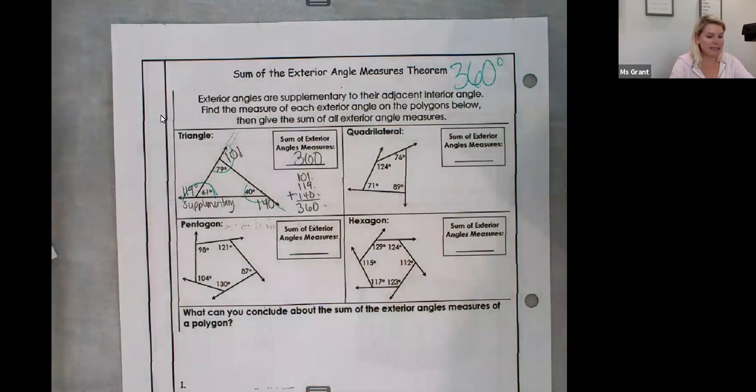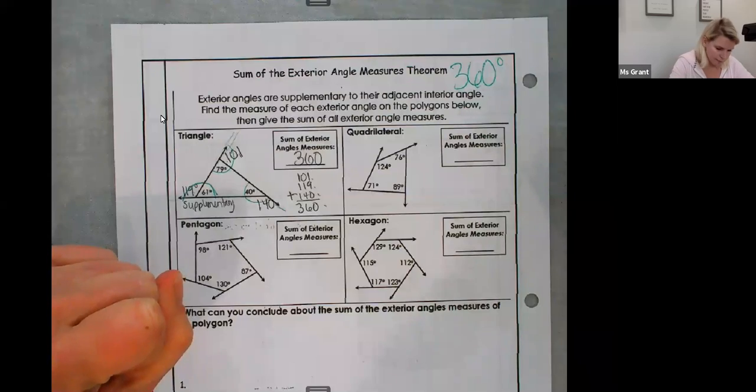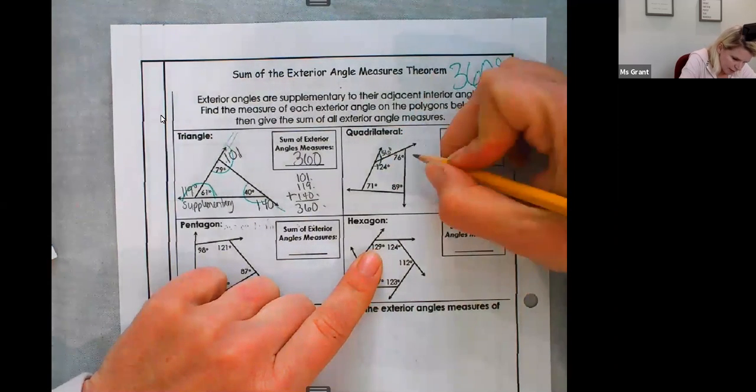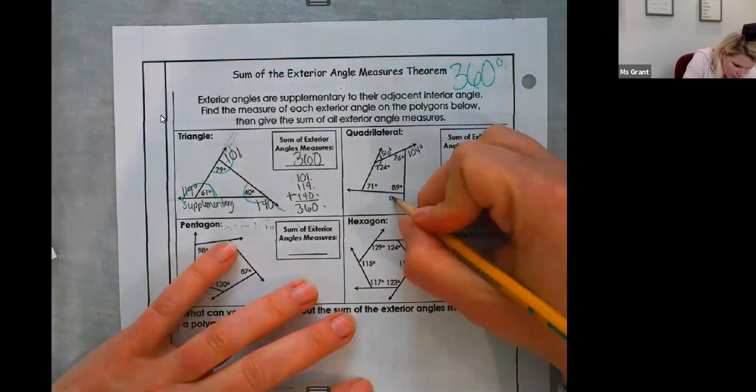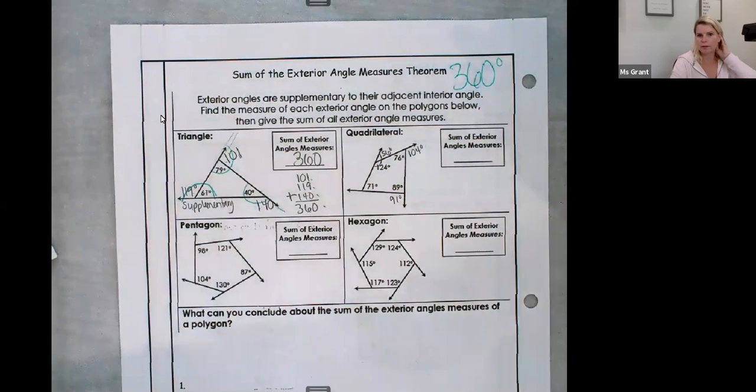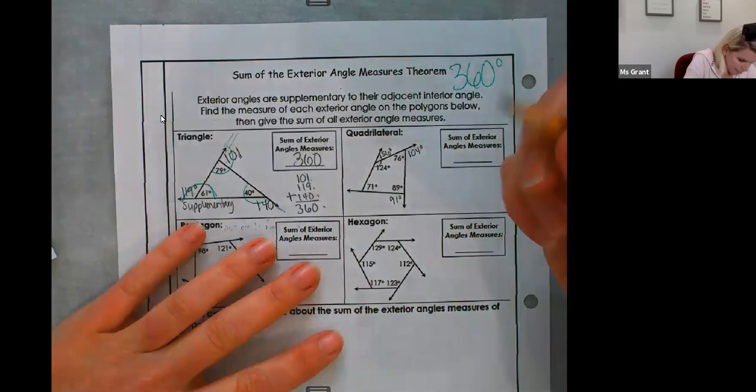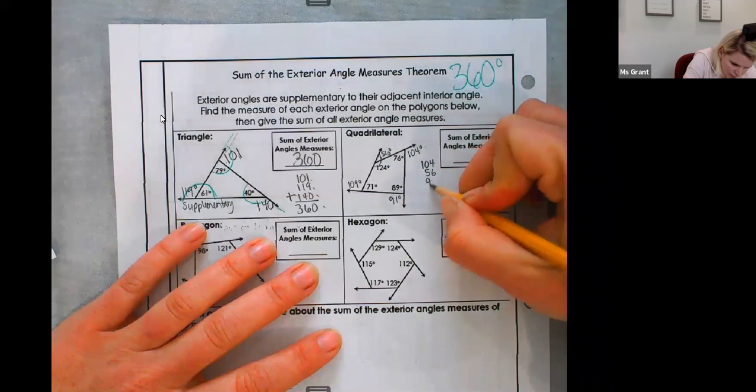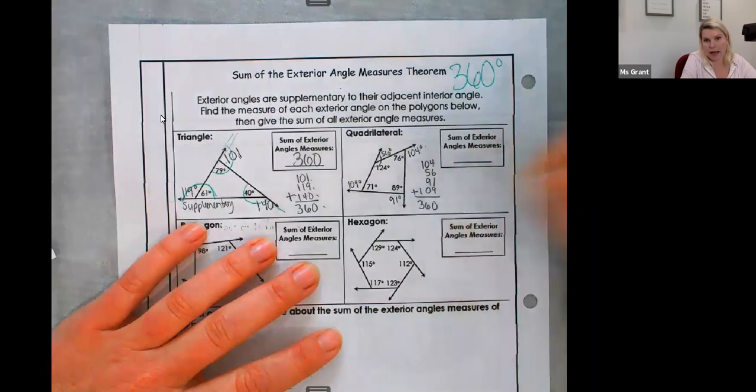For quadrilateral, it's going to be the same process. The exterior lines are drawn. So it's like 124 plus 56, 76 plus 104 degrees, 89 plus 91 degrees. And I'm obviously doing this fast because sitting and doing the calculator, every single problem would take like 10 minutes. 71 plus 109. So when you add them all up, this also adds to 360 degrees.